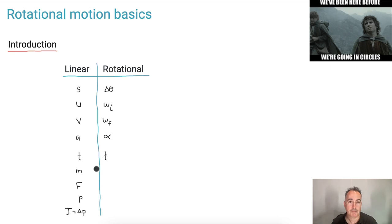What about M, mass? There's a kind of rotational equivalent to mass. It's not exactly, but it's called I. It's the moment of inertia. And again, I'm going to have other videos that walk you through all this, so don't worry.